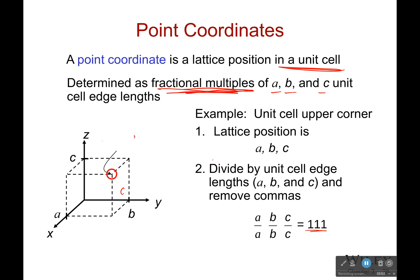How about, let's see, I'm going to pick this point right here. What would its position be? Well, I move a distance A along the X-axis, move 0 along the Y, and then I move a distance C over 2 here. So, that would be A, 0, C over 2. And I divide everything by A, B, and C. So, divide by A, divide by B, divide by C. Now, I get 1, 0, 1 half. And remember, I can have fractional multiples, so I can have fractions when it comes to point coordinates.